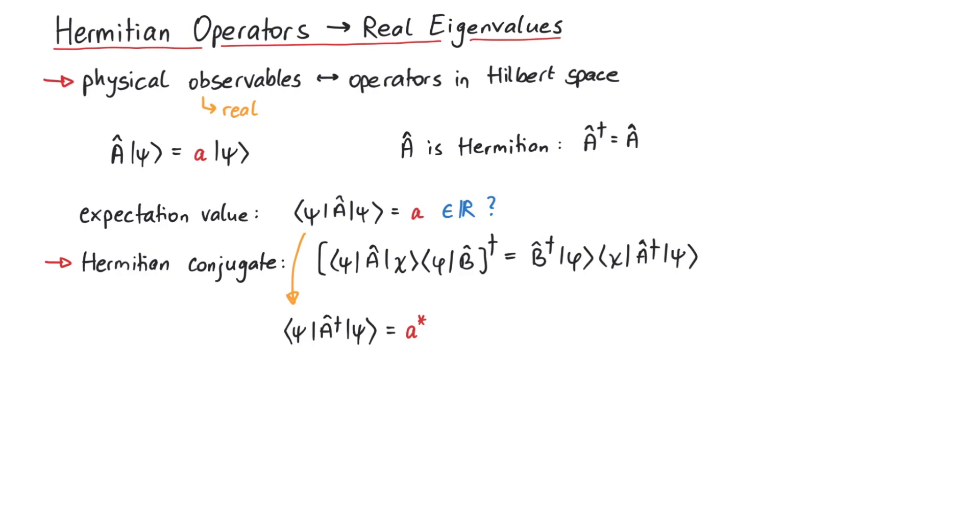However, since we assume that the operator a is Hermitian, so a and a dagger are the same, we can write this as psi a psi being equal to a star.